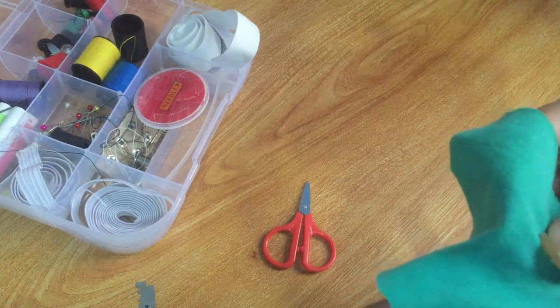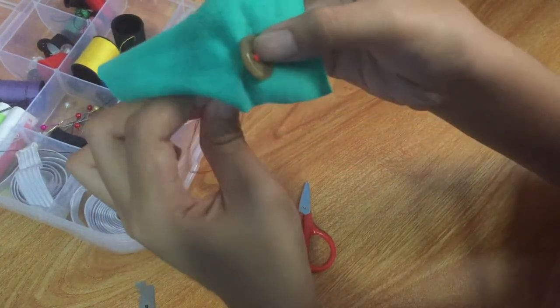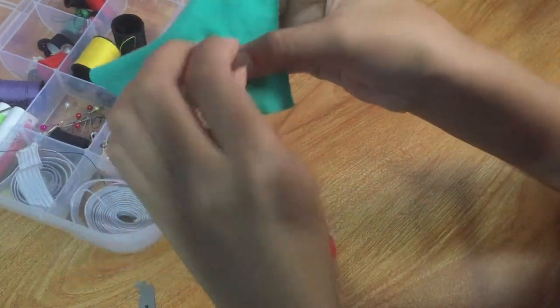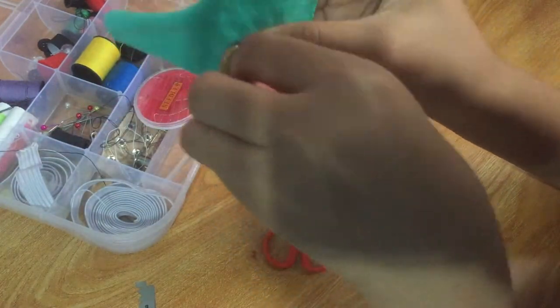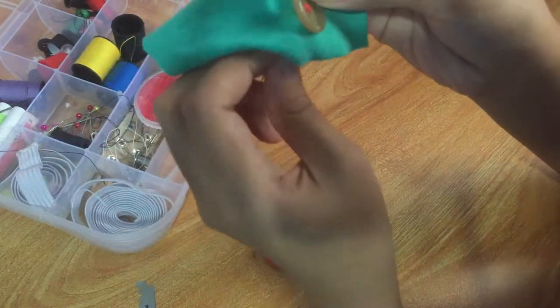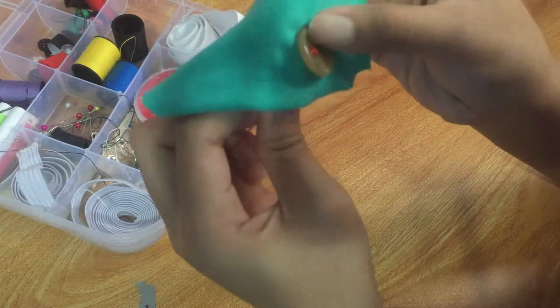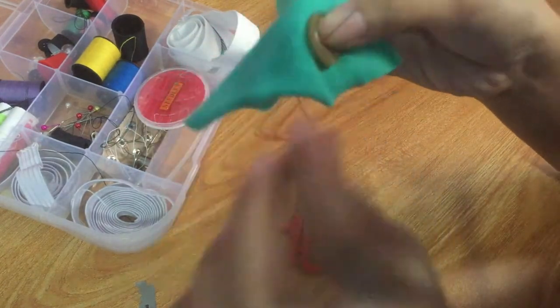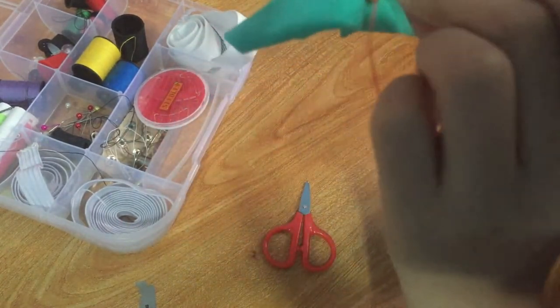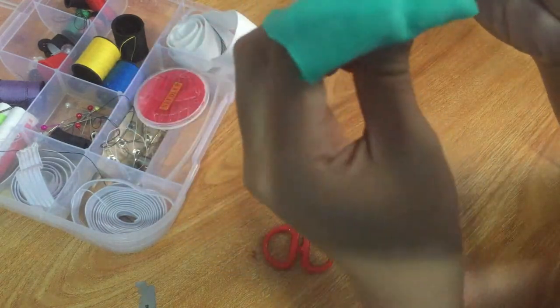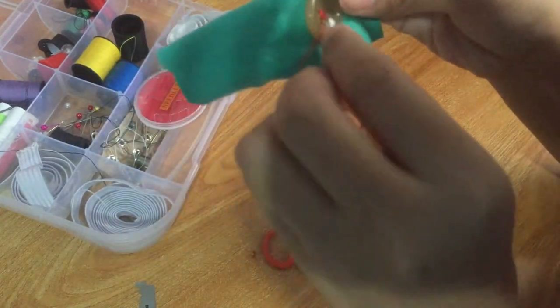Position the button on the fabric. Line the button up with the other buttons on the garment. Also, check the buttonhole. Close the opposite flap or panel where you want it and make sure that the button lines up with the buttonhole.